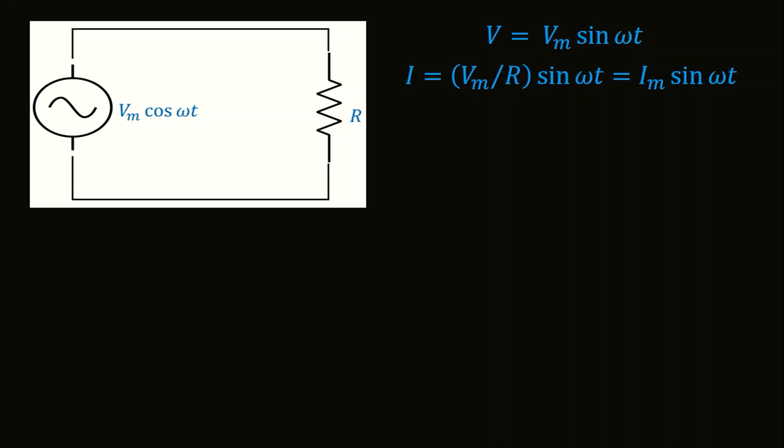Now let's define a new variable P, which is instantaneous power given by this equation. This is obtained by substituting V and I and applying basic trigonometrics for 2 sin A, sin B. We obtain an expression for power given by this equation.